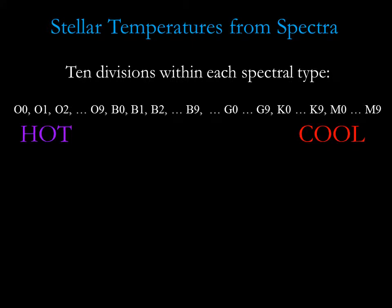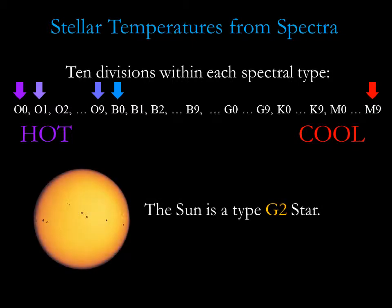Each spectral type is divided into ten subcategories. A spectral type O0 star is hotter than an O1, which is hotter than an O9. The O9 is hotter than the B0 star, and so on. The coolest is M9. Our sun is a type G2 star, hotter than a G3 but cooler than a G1.